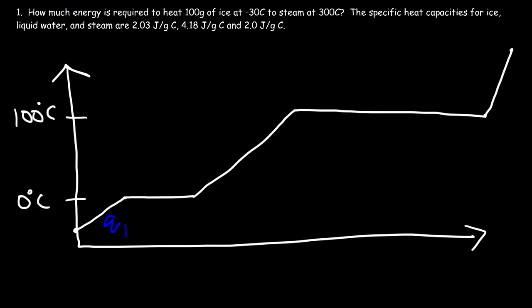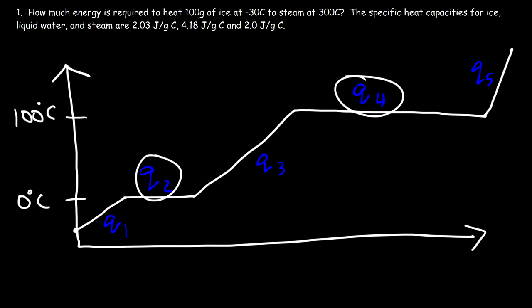Q1 is the energy required to raise the temperature of the ice. Q2 is the energy required to melt ice into liquid water. Q3 is the energy required to heat up liquid water from 0 to 100. Q4 is the energy required to vaporize liquid water into steam. Q5 is the energy required to heat up steam from 100 to 300 Celsius. Q2 and Q4 are associated with a phase change, so you use the equation n times delta H.